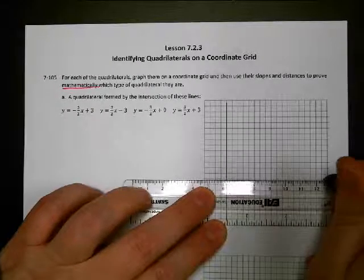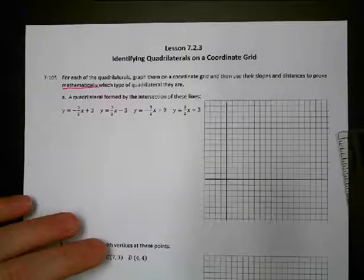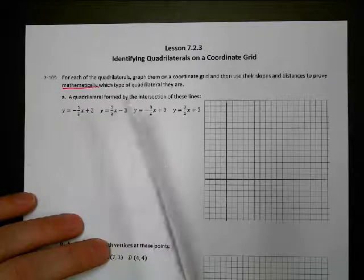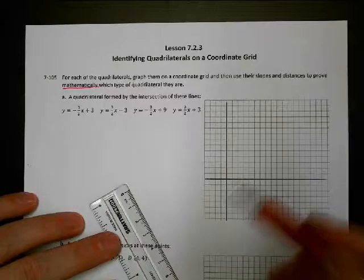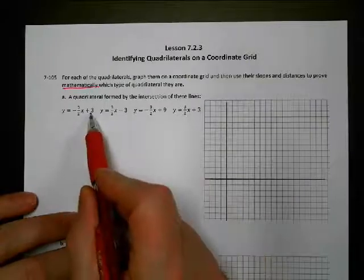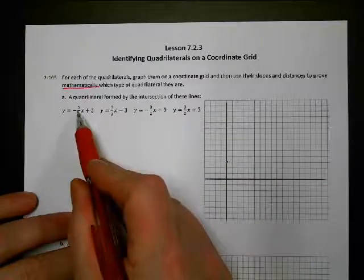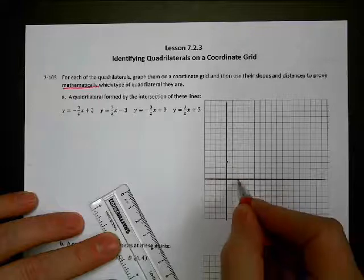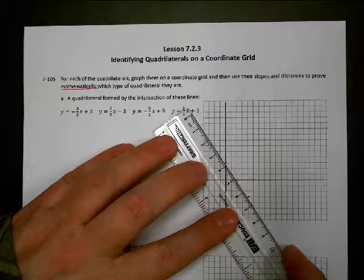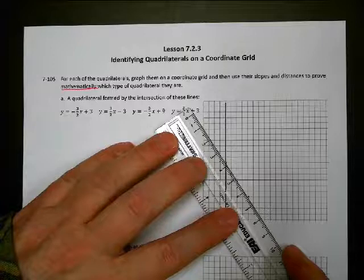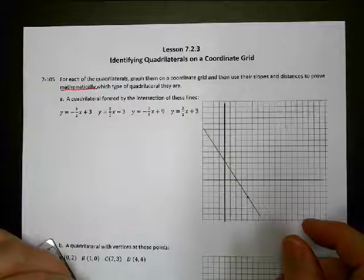I've already done this one before, so I know that it's going to be in the first quadrant. So I'm going to graph these four lines in pencil, and then I can highlight our actual line when we finish it. So the first one has a y-intercept of three, so I'm going to go up one, two, three. And then it has a slope of negative three over two, so I'm going to go down three and over two, and then down three over two.